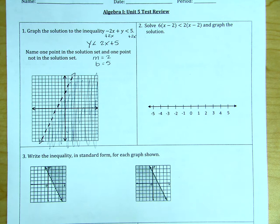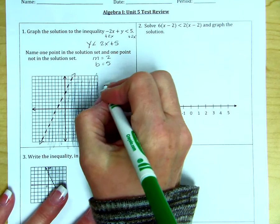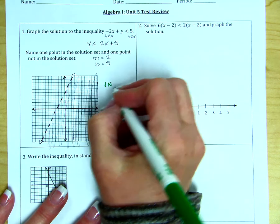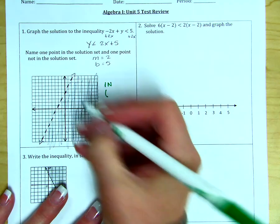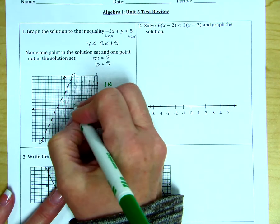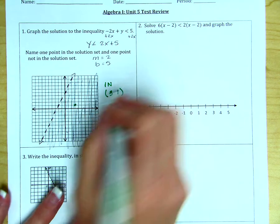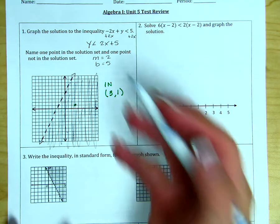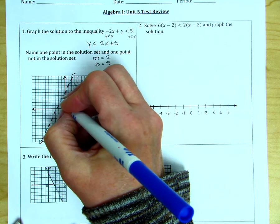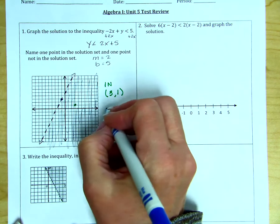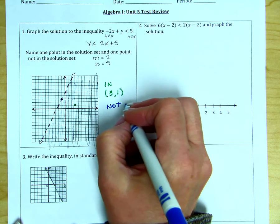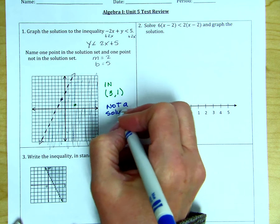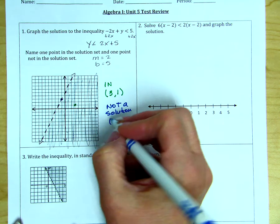So first, name one point in the solution set and one point not in the solution set. So in the solution set would be like this point here, over 3 and up 1. It's in the shaded area. This point here is not a solution.